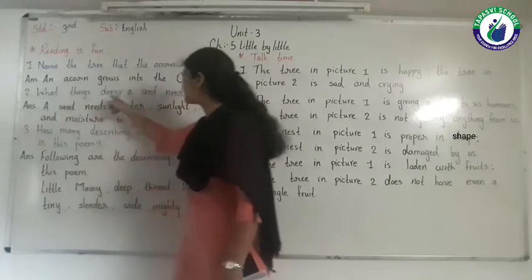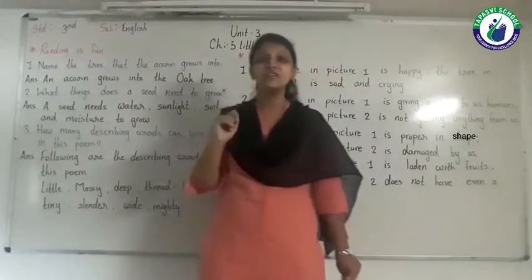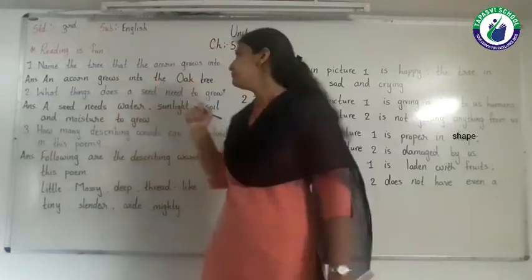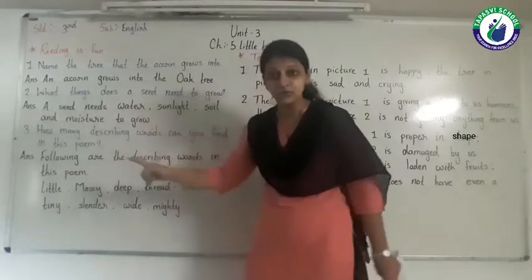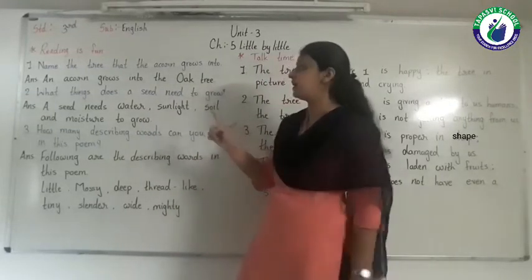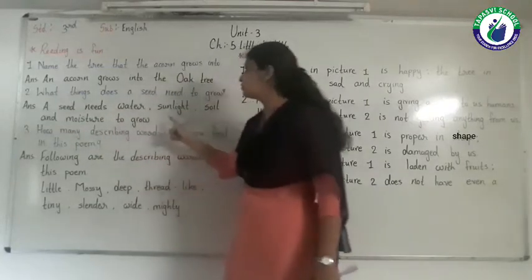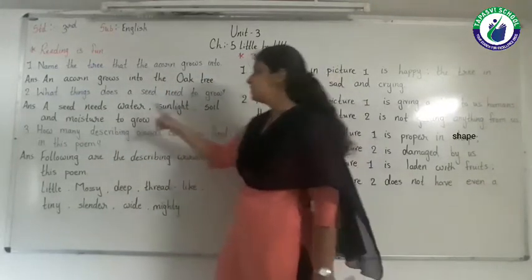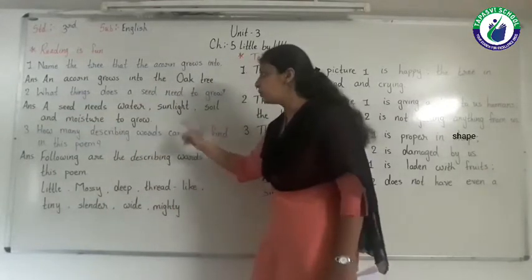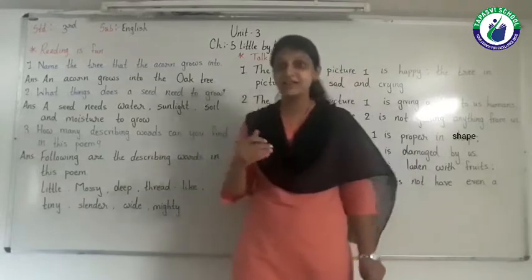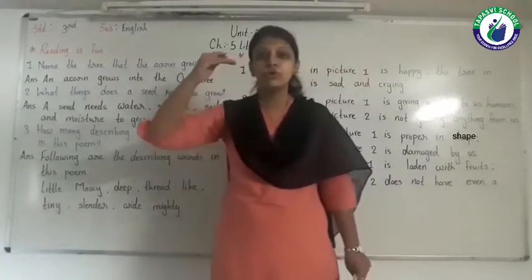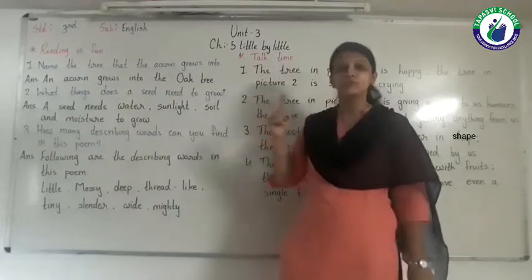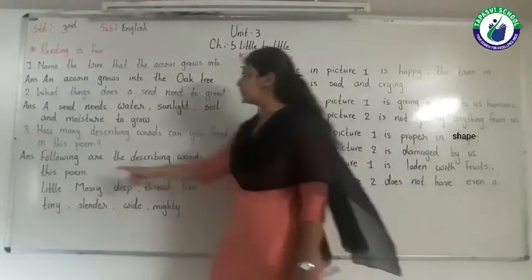Next, number 2: What things does a seed need to grow? A seed needs water, sunlight, soil, and moisture to grow. So a seed needs water, sunlight, soil, and moisture to grow. Grow means to become big.